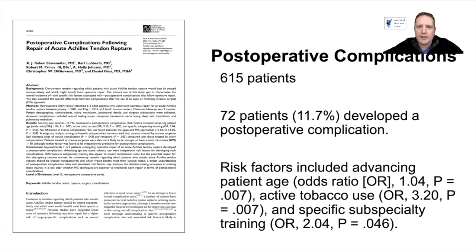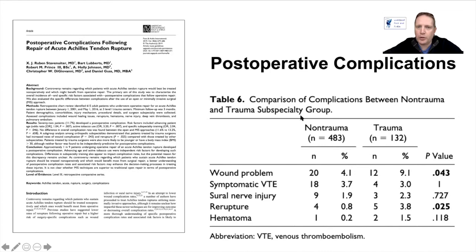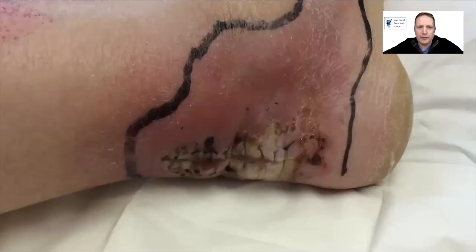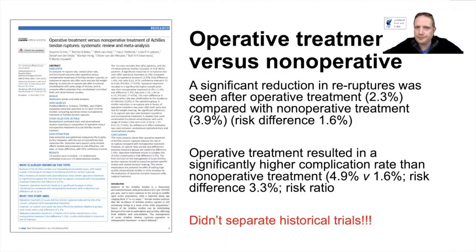Regarding post-operative complications, a study of 615 patients noted an 11.7% complication rate. Risk factors were age, tobacco use, and surgery being performed by non-foot-and-ankle specialists. This is important to note, because if we are offering surgery knowing that there's no difference in functional outcomes or re-rupture rate with functional rehab, then the consent process becomes much more difficult — we would be offering surgery that has a complication rate but with no benefit. A comparison between non-trauma and trauma subspecialties showed a significant increase in surgery in the subspecialty group, and this is what we are trying to avoid.